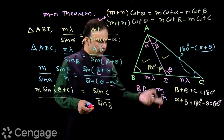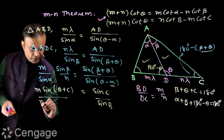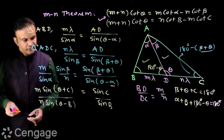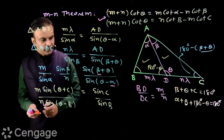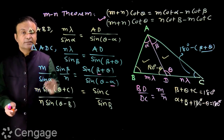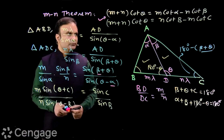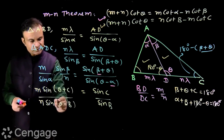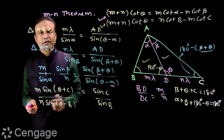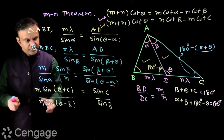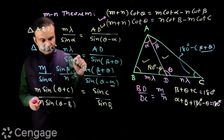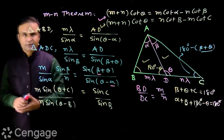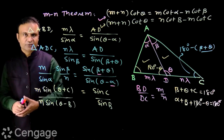Angle alpha equals theta minus B, so we have n multiplied by sin(theta minus B). Expanding sin(theta + C) and sin(theta minus B), then cross multiplying and dividing both sides by sin theta sin B sin C, we obtain the second formula: (m + n) cot theta = n cot B minus m cot C. Now let's find some applications of the MN theorem.